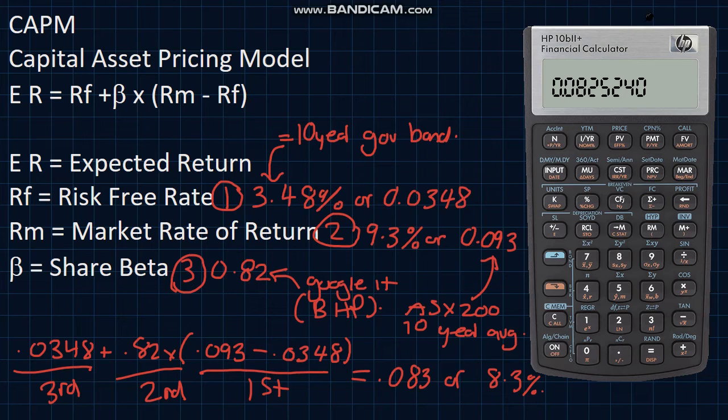However, if the actual return is less than this expected return, then the stock is overvalued. This number can also be used as the cost of equity in a weighted average cost of capital calculation.